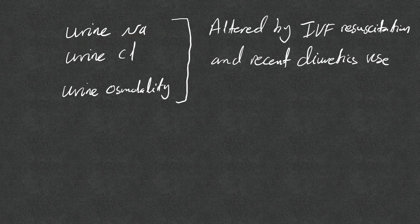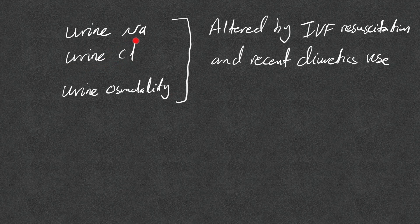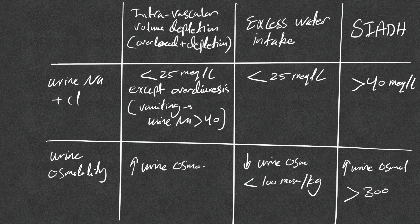When history and physical exam cannot distinguish mild volume depletion from euvolemic causes, we turn to urine tests: urine sodium, urine chloride, and urine osmolality. Note that these values can be altered by IV fluid resuscitation and recent diuretic use. Also, urine osmolality can take several days to return in some facilities, limiting its usefulness. Always obtain urine chloride along with urine sodium, as certain conditions with metabolic alkalosis will cause sodium to spill in the urine while chloride is preserved. In volume depletion or volume overload, urine sodium and chloride are typically low — less than 20 to 25 mEq/L — except in cases of overdiuresis.